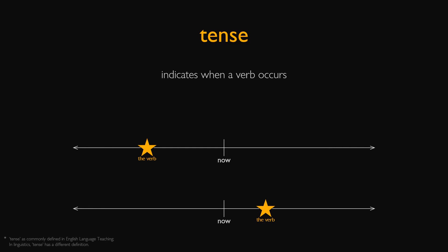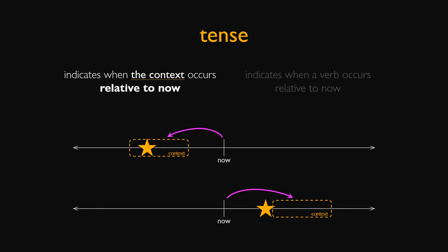Tense is used to convey when a verb takes place, but it's not as simple or direct as it seems at first glance. It doesn't so much matter when the verb occurs relative to now, but instead when the context occurs relative to now, and when the verb occurs relative to the context. These are the two primary components of tense: time reference and aspect.